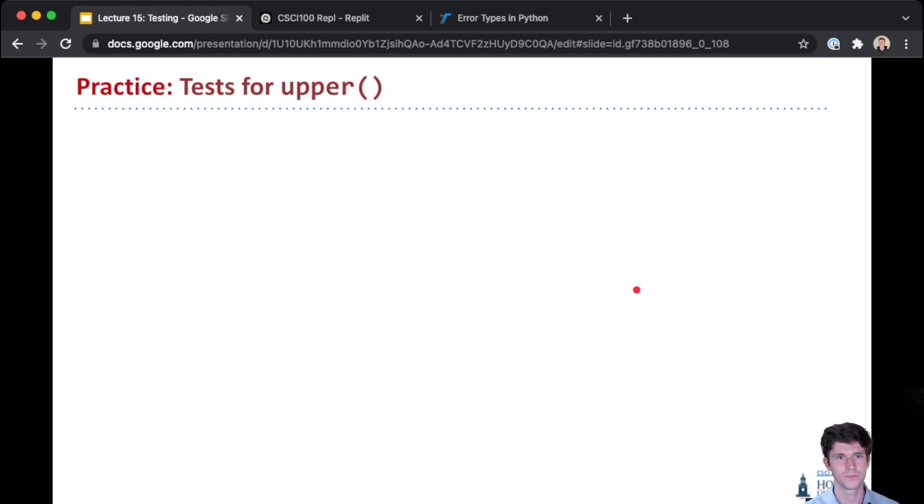Well, here's another example: uppercase. This is a function that returns a given string all in uppercase letters. So what test cases should we try to make sure that our function works correctly? What are all the possible cases we should try?